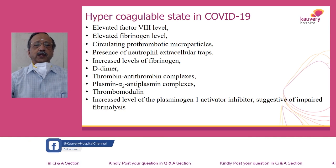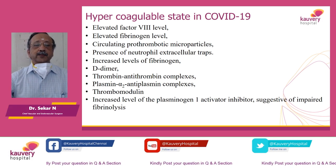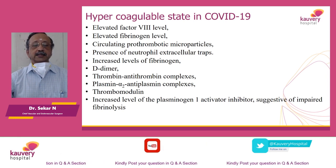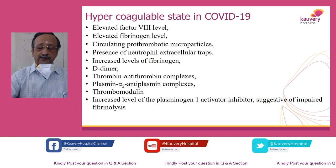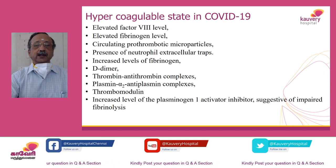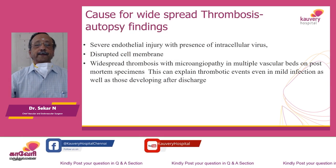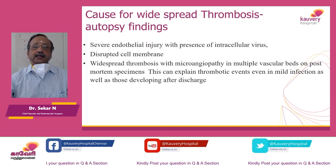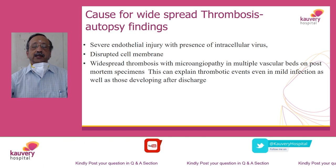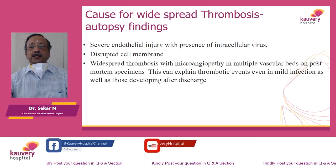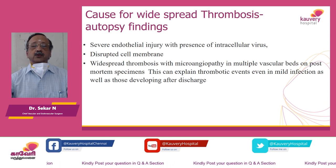Regarding the hypercoagulable state, all the coagulation parameters are completely gone haywire. We can recognize this with simple tests like D-dimer, which goes very high, and elevated fibrinogen levels, which give us an idea that coagulation is at fault and the patient is likely to develop clotting in different parts of the body. This has been proved with autopsy findings in the West, showing severe endothelial injury with the presence of intracellular virus — something we have not seen in other viral diseases. When the endothelium ruptures, there is a raw area produced which undergoes thrombosis.